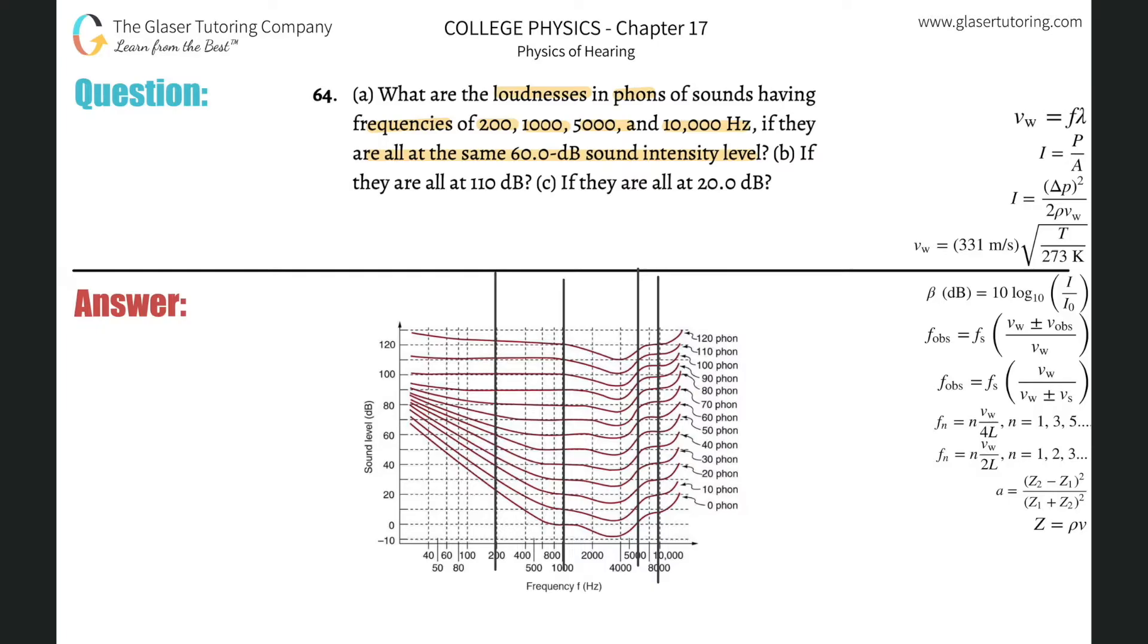And now what we've got to do is find the 60 decibel sound intensity level. So here it is. Draw your line on over. And now all you've got to do is figure out where this line intersects. What phone value does these intersect, right?